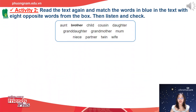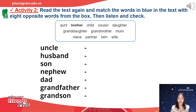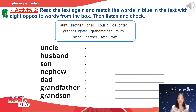Okay, we move to activity two: read the text again and match the words in blue in the text with 8 opposite words from the box, then listen and check. Hoạt động số 2 thì mình sẽ đọc lại những từ ngữ được viết ở trong cái hộp này và sau đó mình tìm những từ trái nghĩa với các từ được viết ở bên cột bên tay trái màn hình.